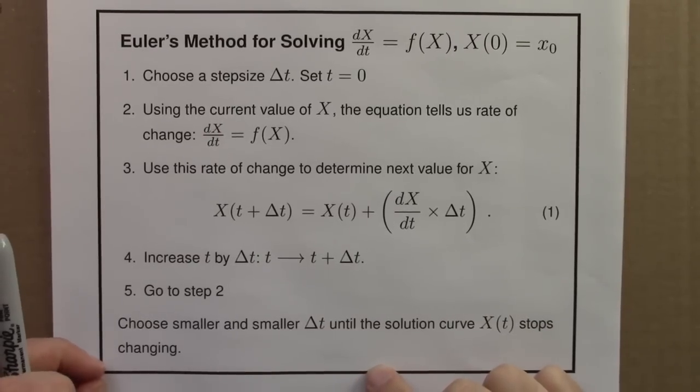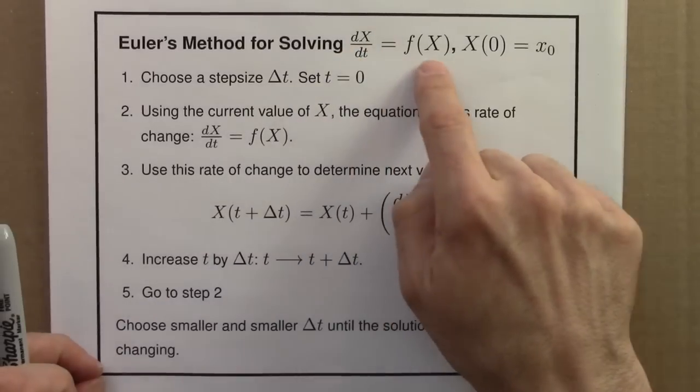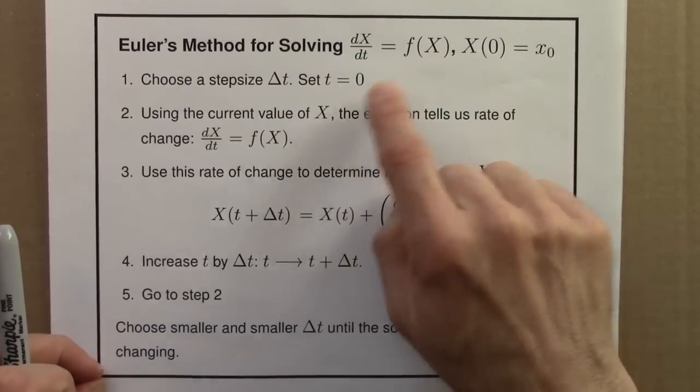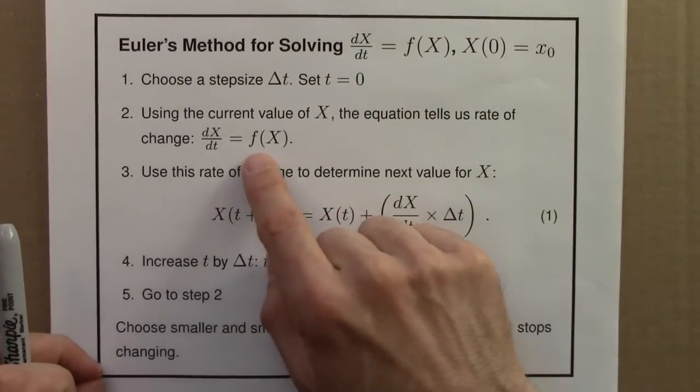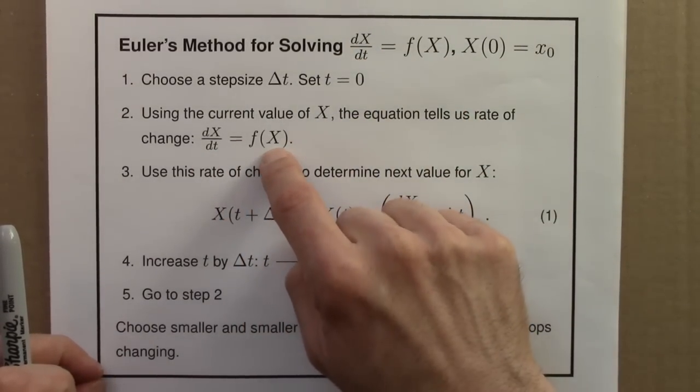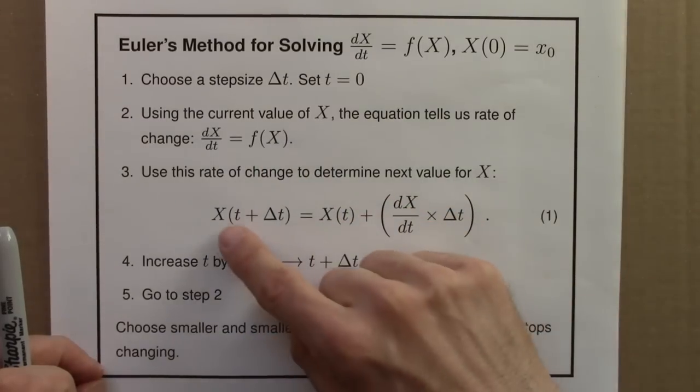So this is Euler's method in a nutshell. It gets at the heart of what the differential equation means. The rate of change is given by the quantity x. We use that rate of change to figure out x.